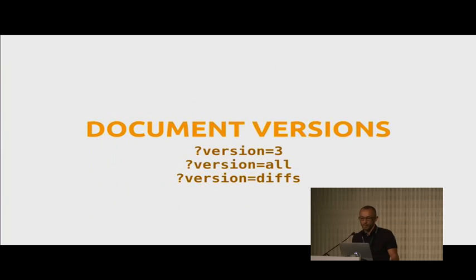Document versioning is something we just released — it is basically Git for documents. When you switch this on, you get versioning for your documents. This feature was contributed by a SpaceX engineer, so I'm very proud of that. You can ask for version 3 of a document, get all versions, or even ask for the diffs between documents. Maybe not something everybody needs, but it's very cool to have at hand.